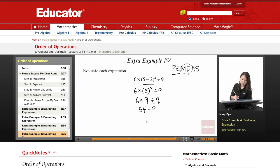54 divided by 9 is 6. So my answer to this, 6 times 5 minus 2 squared divided by 9. As long as you follow the order of operations, your answer will be 6.